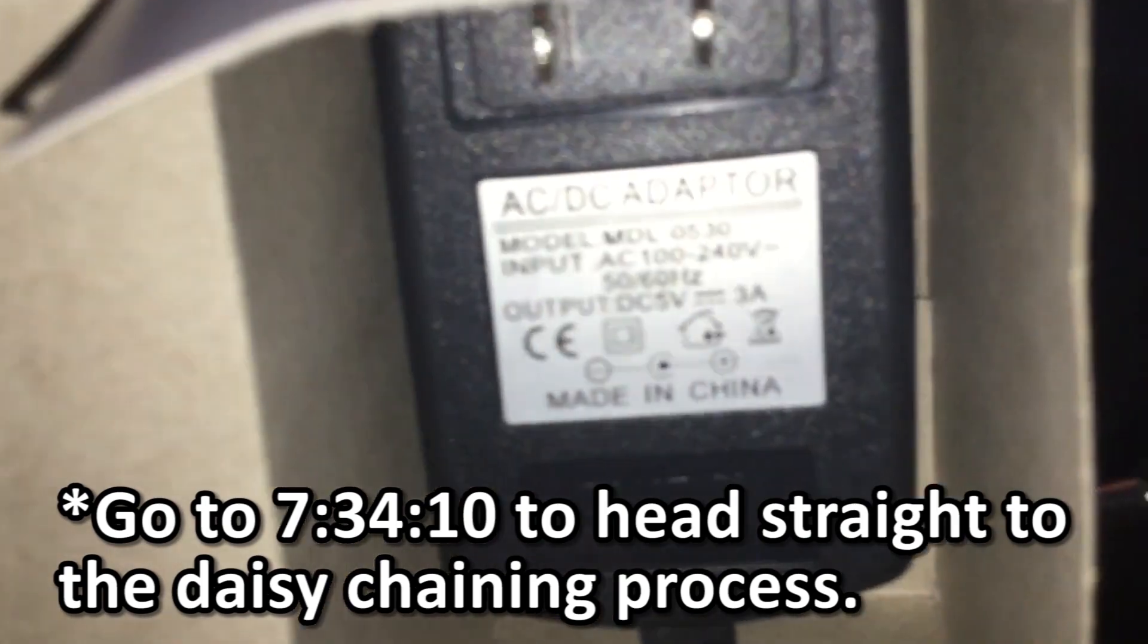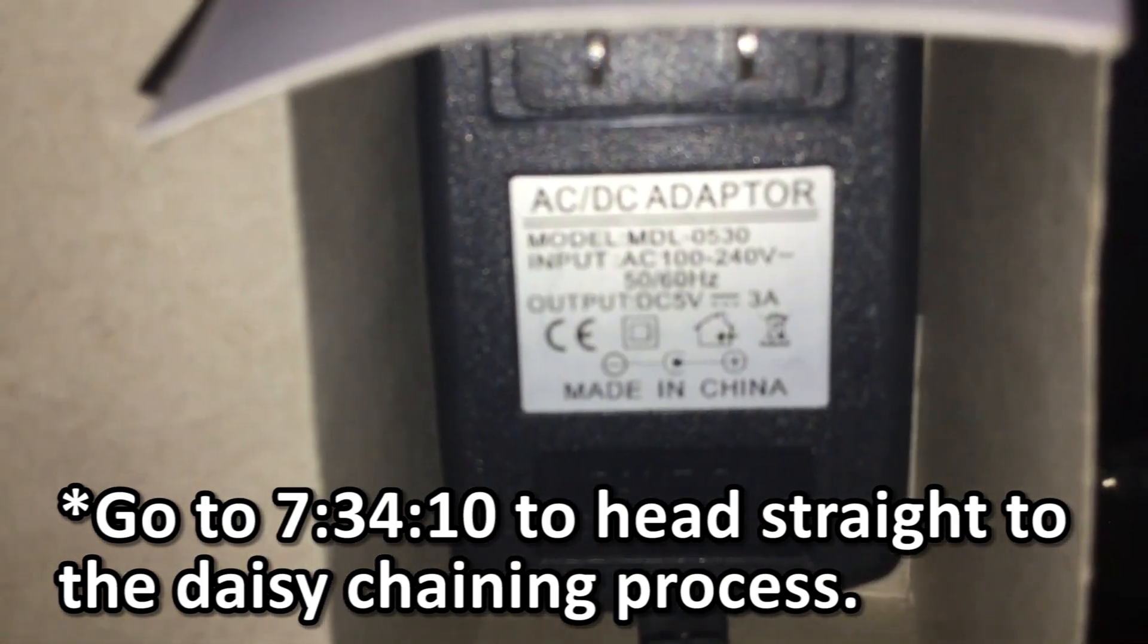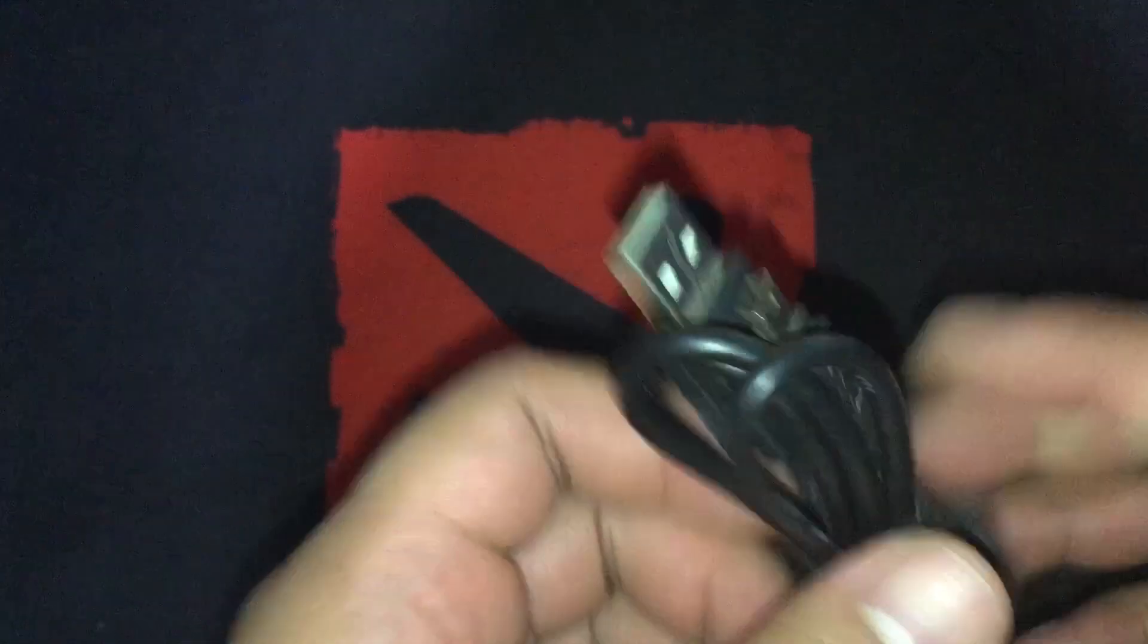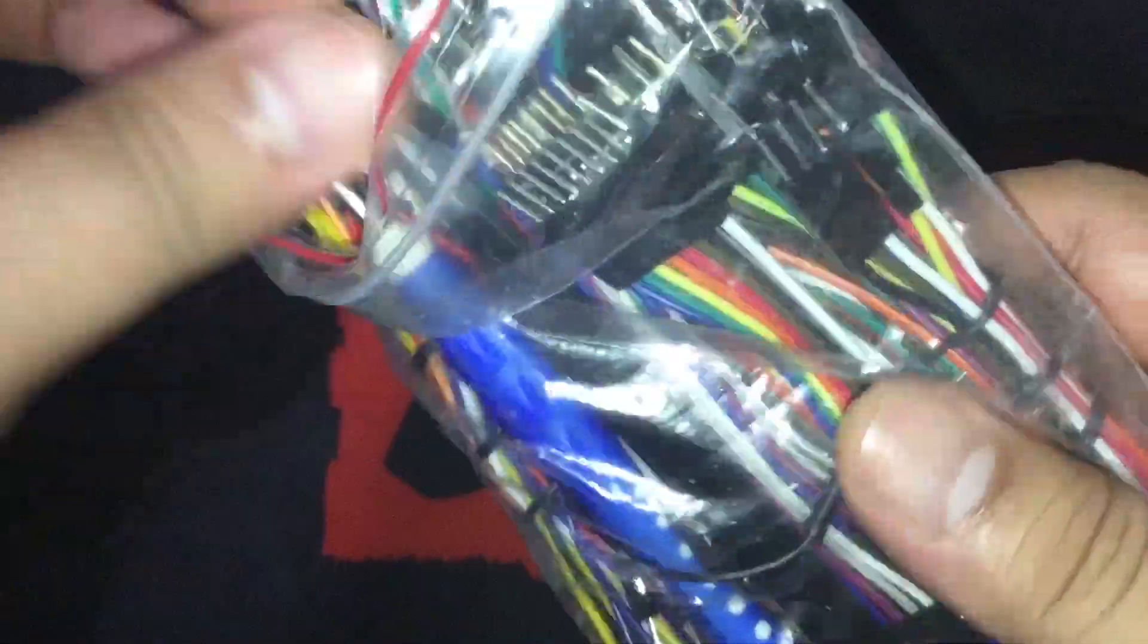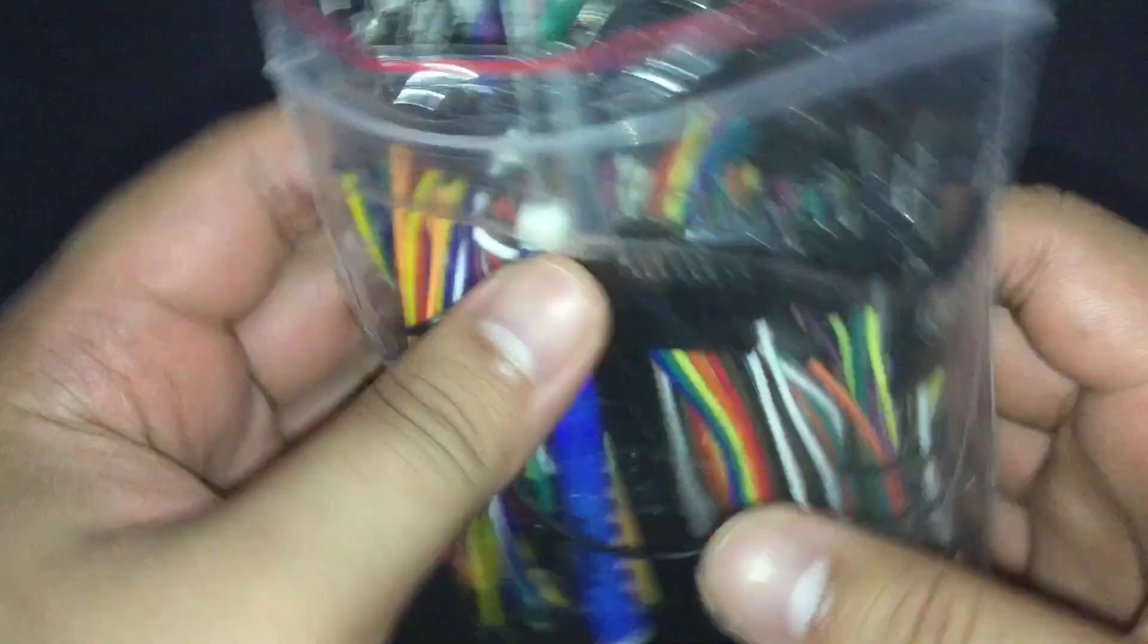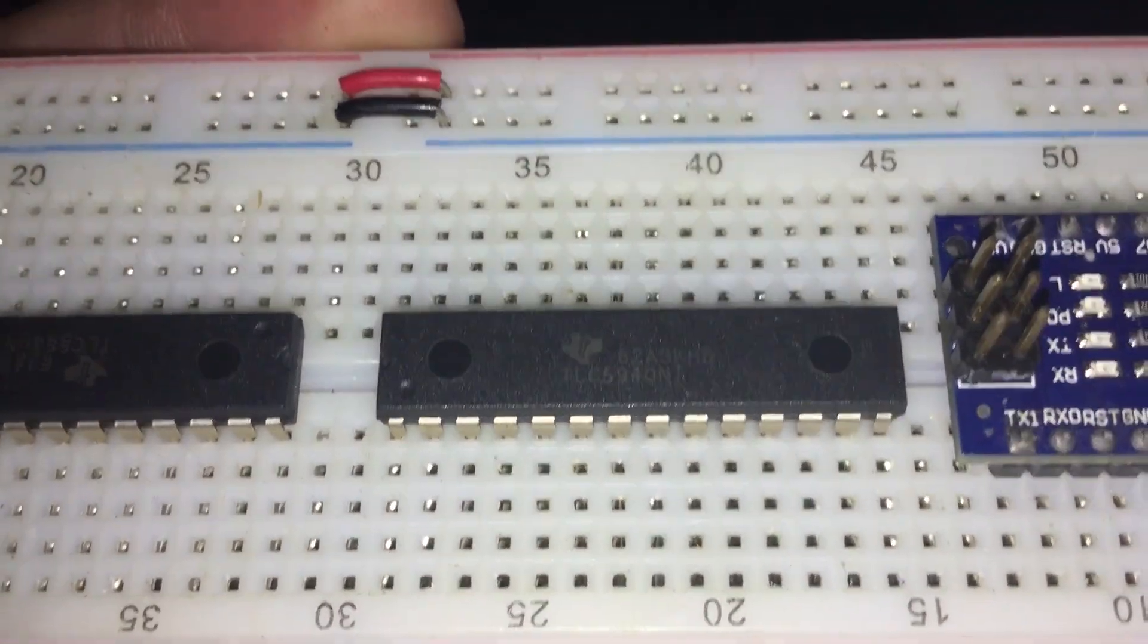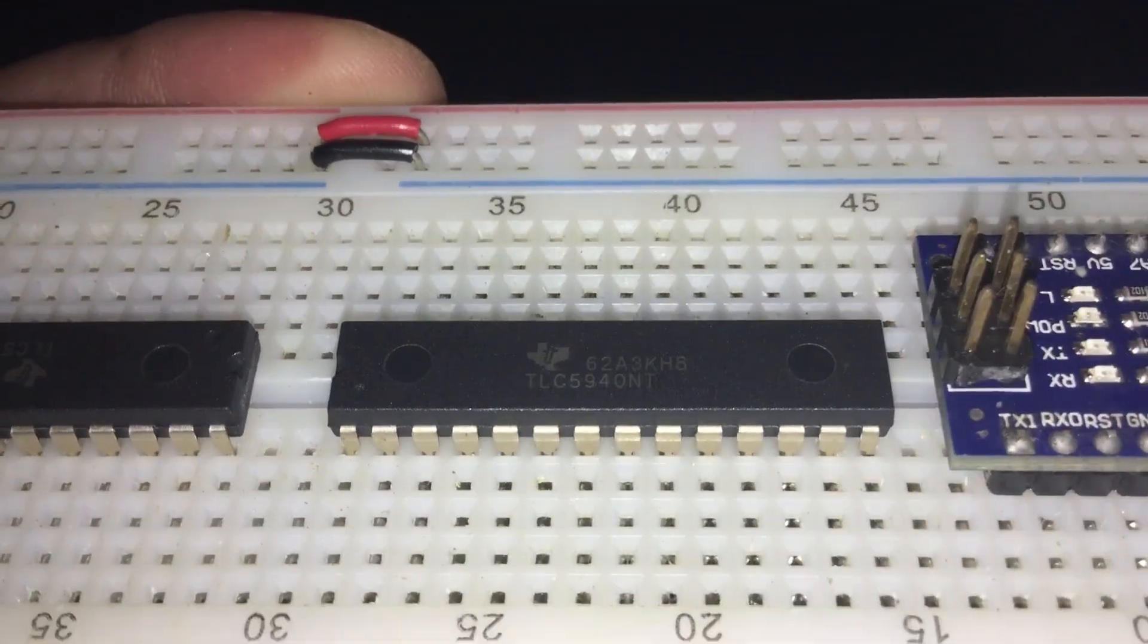First is a 5V 3A DC power supply just in case we need more power. Data cable. Jumper cables. Also, a set of tweezers for hard to reach spots if you have one. A breadboard of course. An Arduino Nano. And these guys. These are the TLC-5940s that we have discussed earlier. A breadboard power supply just in case.